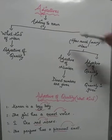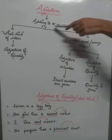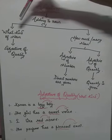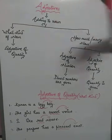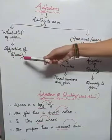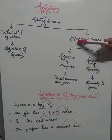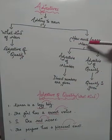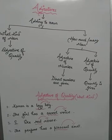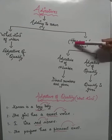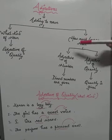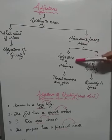What does adding to noun mean? It means it tells us what kind of noun it is — that is, adjective of quality — or how much or how many the noun is. When you discuss how much or how many, there are two types of adjectives.